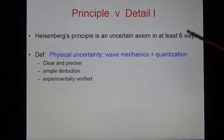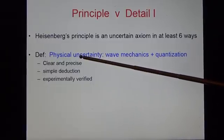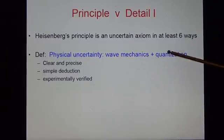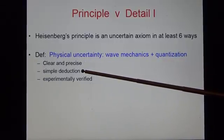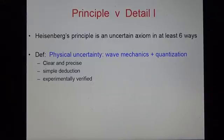By contrast, physical uncertainty, which is defined in wave mechanics and quantization is clear and precise, it's simple in deduction, and it's experimentally verified.